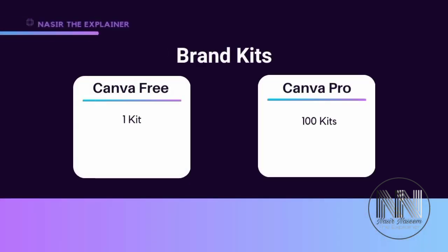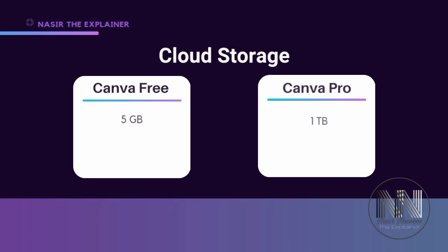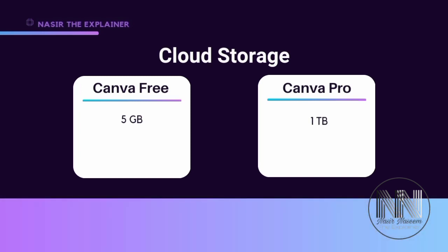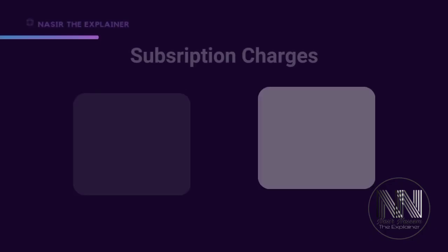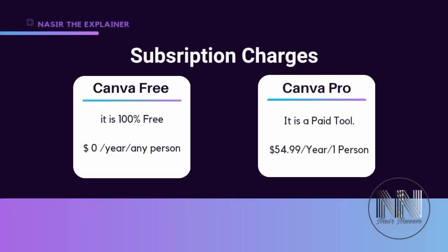Regarding brand kits, only one kit is available in the free version, whereas you can work with 100 brand kits in the Pro version. For data storage, the free version offers only 5 GB, whereas the Pro version provides up to 1 TB of cloud storage.